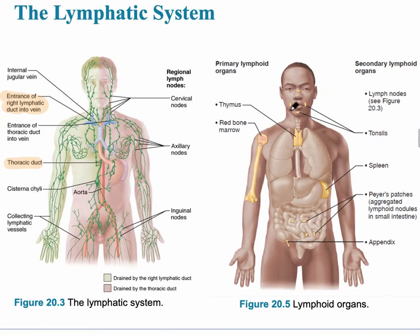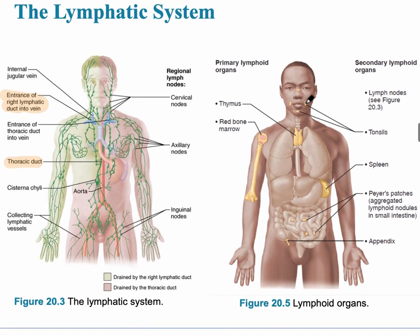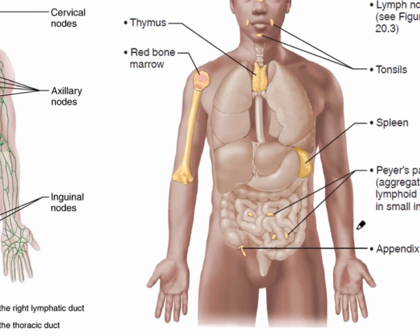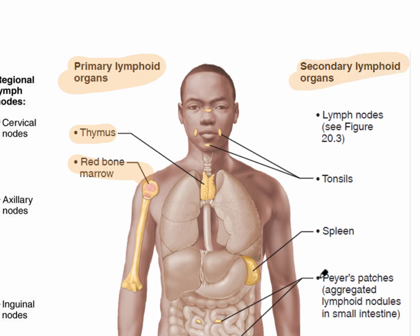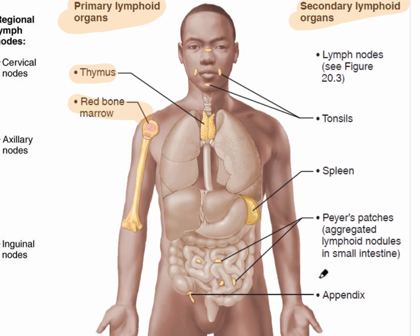The other side of this image shows lymphoid organs. There are two different types. The primary lymphoid organ is the initial place where the two types of lymphocytes are produced — that would be the thymus and the red bone marrow. The secondary lymphoid organs are areas of the body with large collections of lymph nodes.